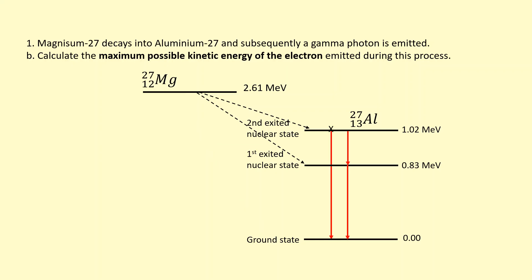However, the question does specify that a gamma photon must be emitted. So the biggest gap from magnesium to one of the excited nuclear energy levels is going to be this one here, this transition from this state to this state.